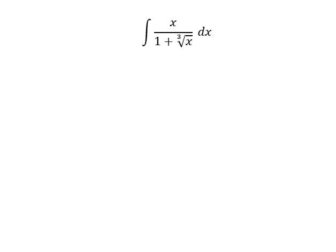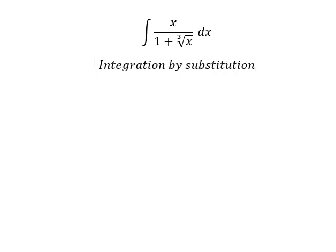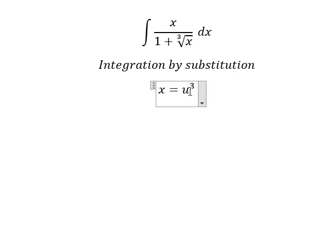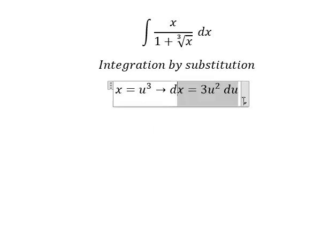Hey guys, welcome back to my channel. Today I want to show you how to answer this question using integration by substitution. I will put s equals u to the power of three, because we want to cancel the cube root. Then we need to do the first derivative for both sides, and we have like this.